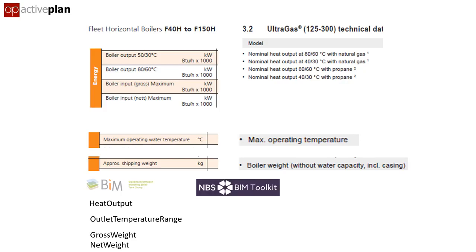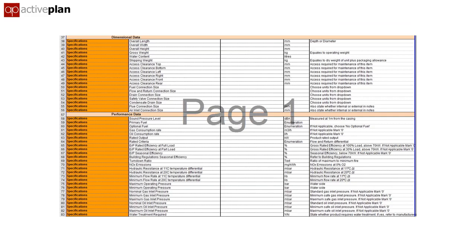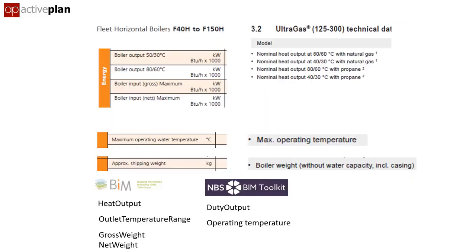The boiler template in the BIM toolkit that MBS produced three years later uses different terms: duty output and operating temperature. SIBSI established their own team of industry experts to try and agree what property sets should be captured against each type of product, and they came up with different terms again.